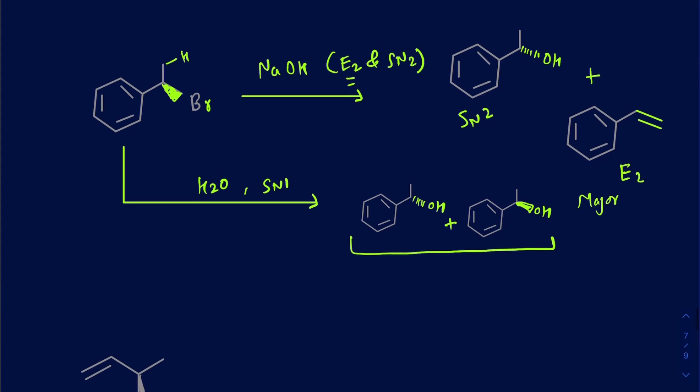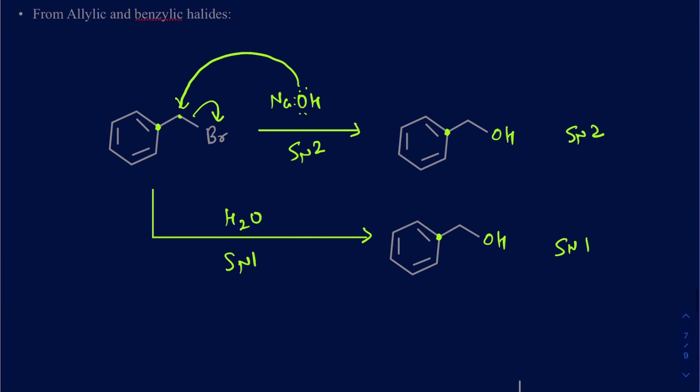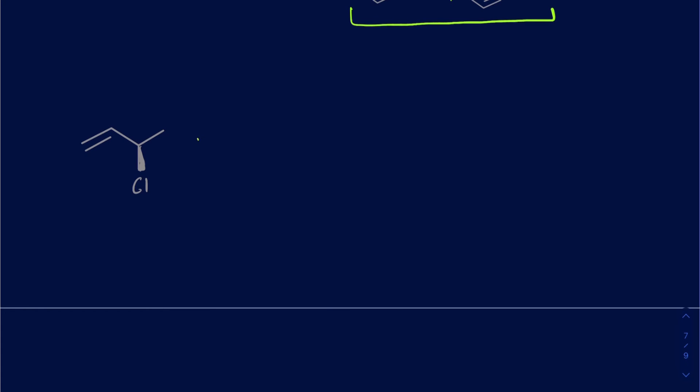If you're really trying to get an alcohol, you'd rather do an SN1 using water instead of NaOH. But sometimes it doesn't matter — like in the previous case where there was no beta hydrogen, I could use NaOH without worrying about elimination. For this last allylic example, if I use KOH, it's going to give both SN2 and E2. You can selectively get E2 if you use a bulky or non-nucleophilic base like NaOH or LDA, but if you use KOH, you will get both.